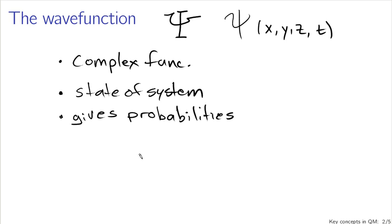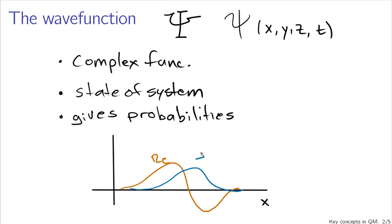So for instance, if I have a coordinate system, something like this, where say this is position in the x direction, psi, with both real and imaginary parts, might look something like this. This could be the real part of psi, and this could be the complex or the imaginary part of psi.